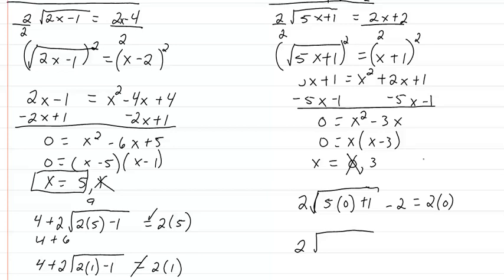So now we have 5 times 3 plus 1 minus 2 equal to 2 times 3. So we've got 5 times 3 would be 15 plus 1 gives us 16. Square root of 16 is 4. So we have 2 times 4 which would be 8. 8 minus 2 is 6 and 2 times 3 is 6. So that one checks. So they both check. And so then we end up with 2 solutions for this radical equation.